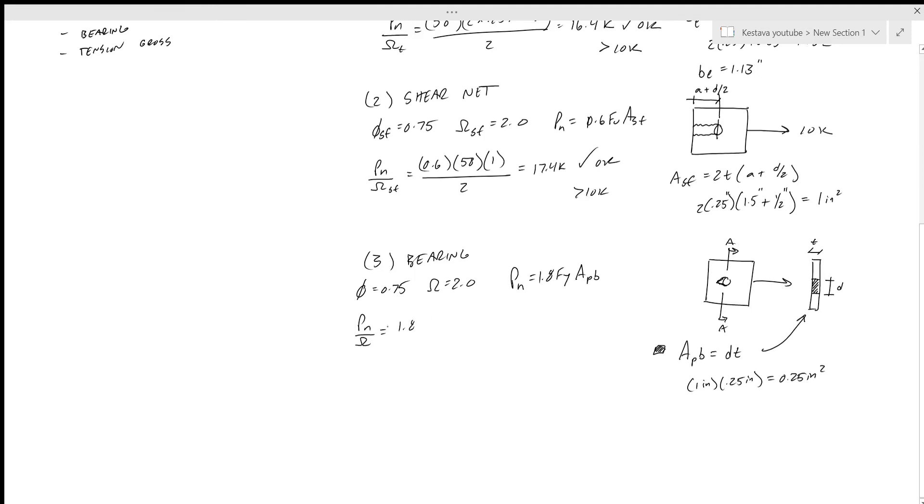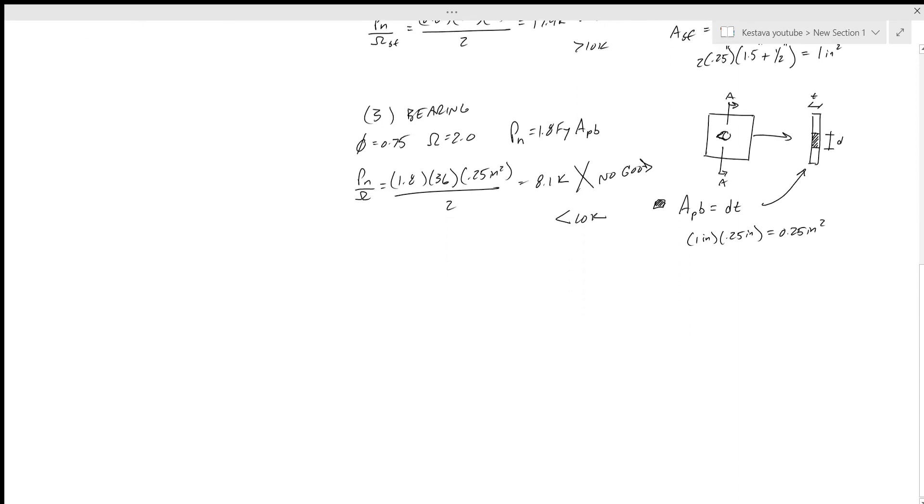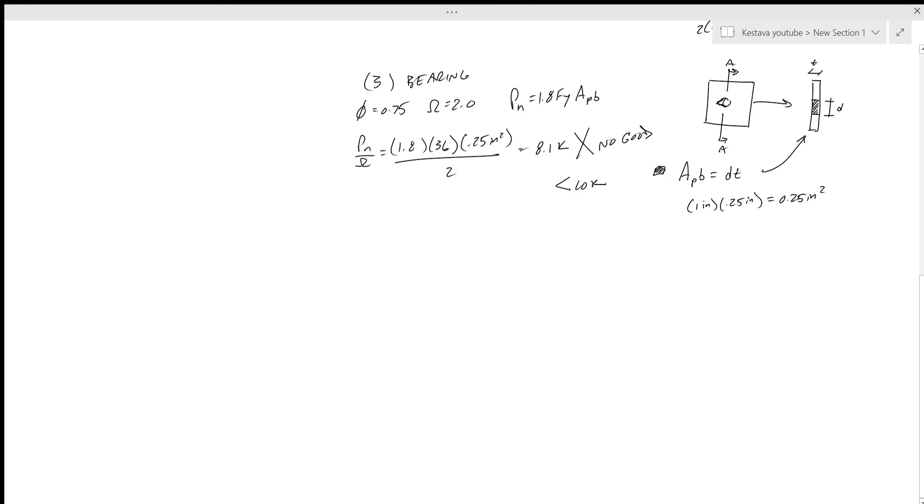All right, so that gives us everything. So P_n is equal to 1.8, 0.36 – so this is F_y, so be careful that it's no longer F_u, it's F_y – times A_pb, 0.25 inches squared, over 2, which equals 8.1 kips. No, no good. That is less than 10k, so that does not work out in bearing. So not good, not good.